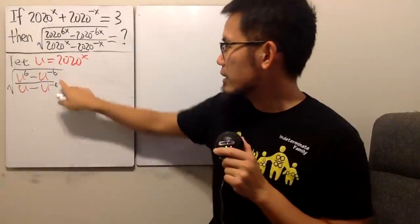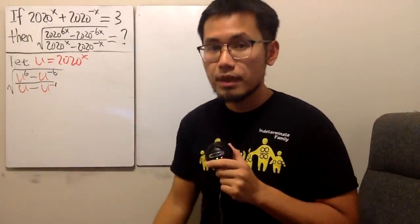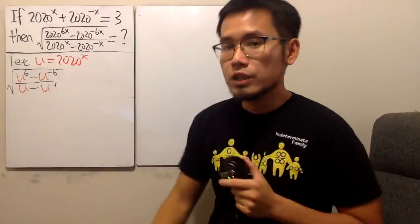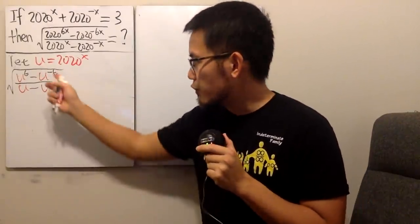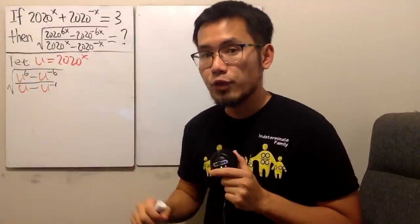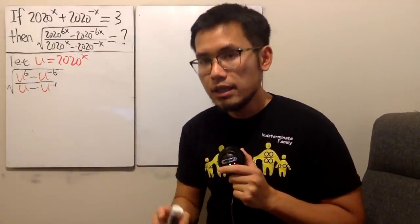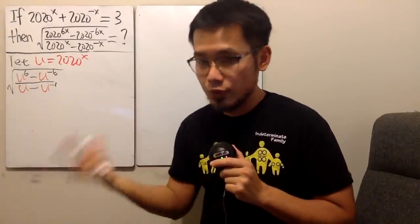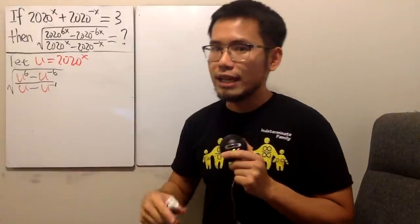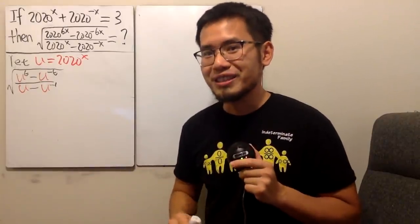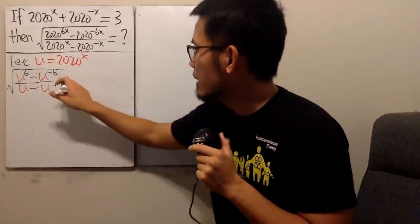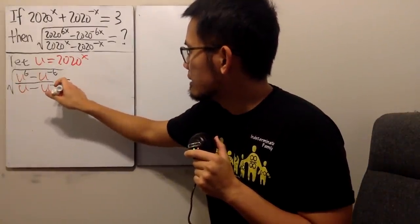All right. So now let's see what we can do with this. Have a look. This right here is the difference of two sixth powers. So we can look at this as the difference of two squares or the difference of two cubes. It's easier to look at this as the difference of two squares first and then we factor it. If you want to do it the other way, in fact I have a video on that already. It's kind of tricky, so check that out if you'd like.